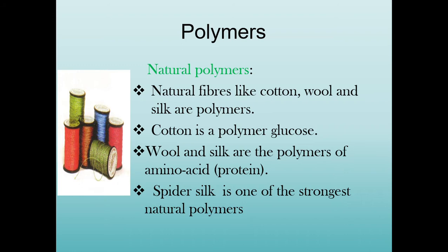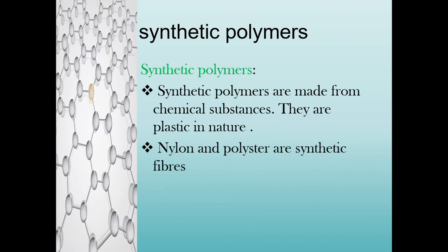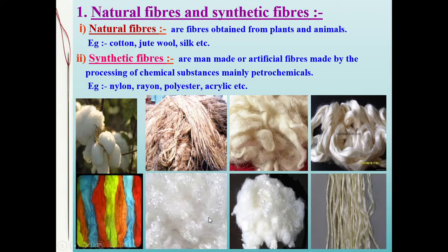Spider silk is one of the strongest natural polymers. Wool is obtained from animals, cotton and jute from plants — these are natural fibers and are also polymers. Synthetic polymers are man-made; here you can see monomers repeating and joined in a particular pattern to form a synthetic polymer. Nylon and polyester are examples of synthetic polymers.